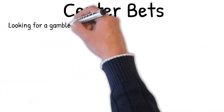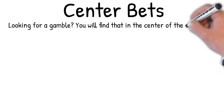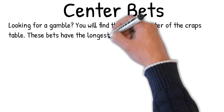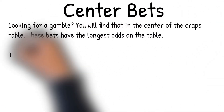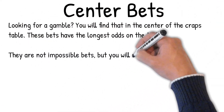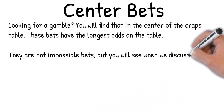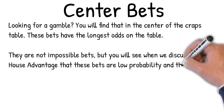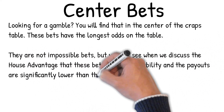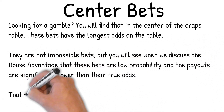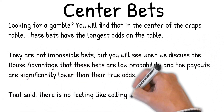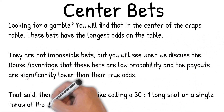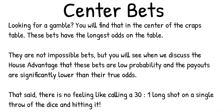Center bets — looking for a gamble? You'll find that in the center of the craps table. These bets have the longest odds on the table. They are not impossible bets, but when we discuss the house advantage you'll see that these bets are low probability and the payouts are significantly lower than their true odds. That said, there is no feeling like calling a thirty to one long shot on a single throw of the dice and hitting it.